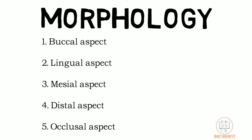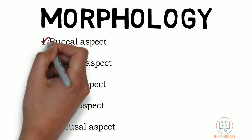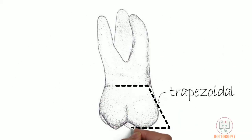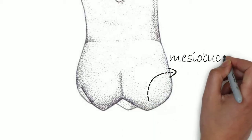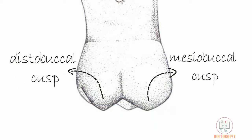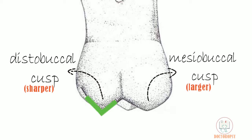The morphology of teeth is studied under 5 aspects. Starting with the buccal aspect, the outline form of the crown is trapezoidal with the shorter side towards the cervix and longer side towards the cusps. Both buccal cusps — mesiobuccal and distobuccal — are seen, where the mesiobuccal cusp is larger. Though the distobuccal cusp is sharper, as its cuspal slopes meet at a right angle, whereas the cuspal slopes of the mesiobuccal cusp meet at an obtuse angle.